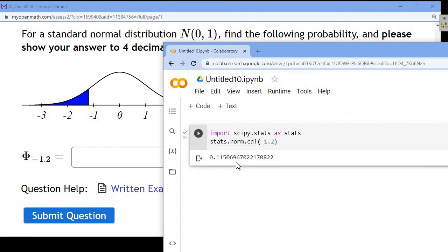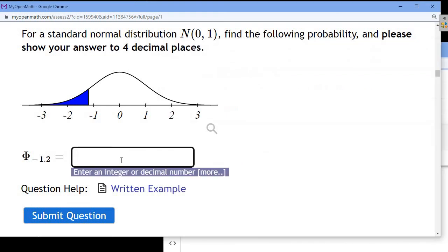it actually gives me the area to the left of negative 1.2. And that area is about 0.1151, if I round it to four decimal places. And that would be the probability or the proportion of the values in the sample that are to the left of negative 1.2. Basically, this means that negative 1.2 is the 11th percentile, or I guess if you round this, it would be the 12th percentile.